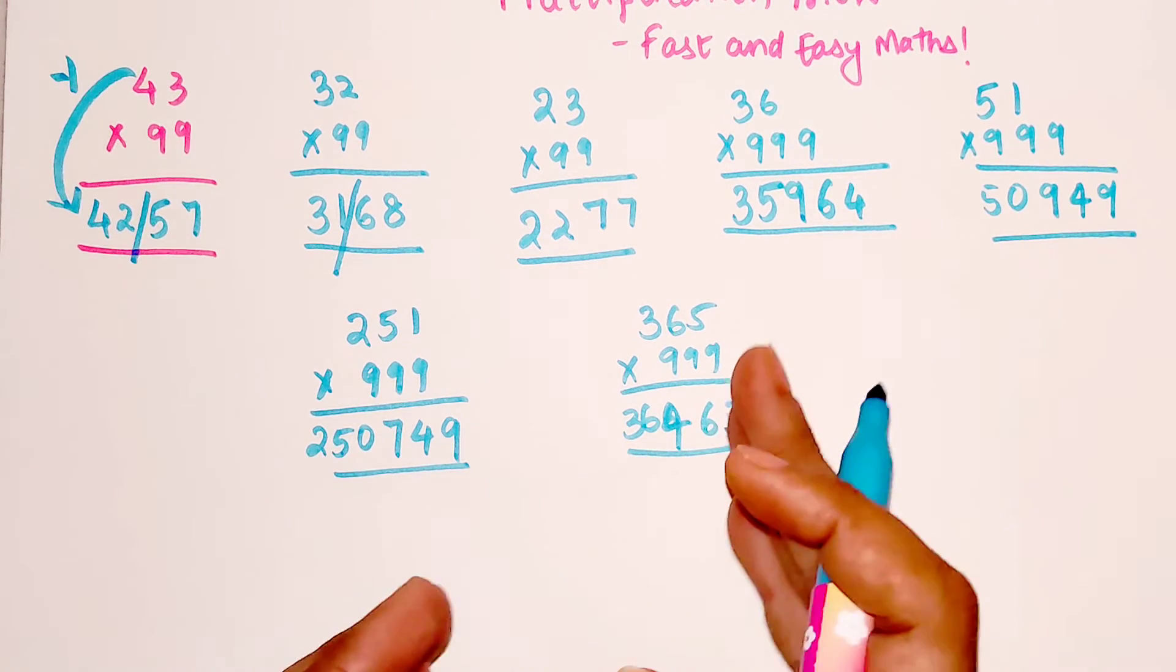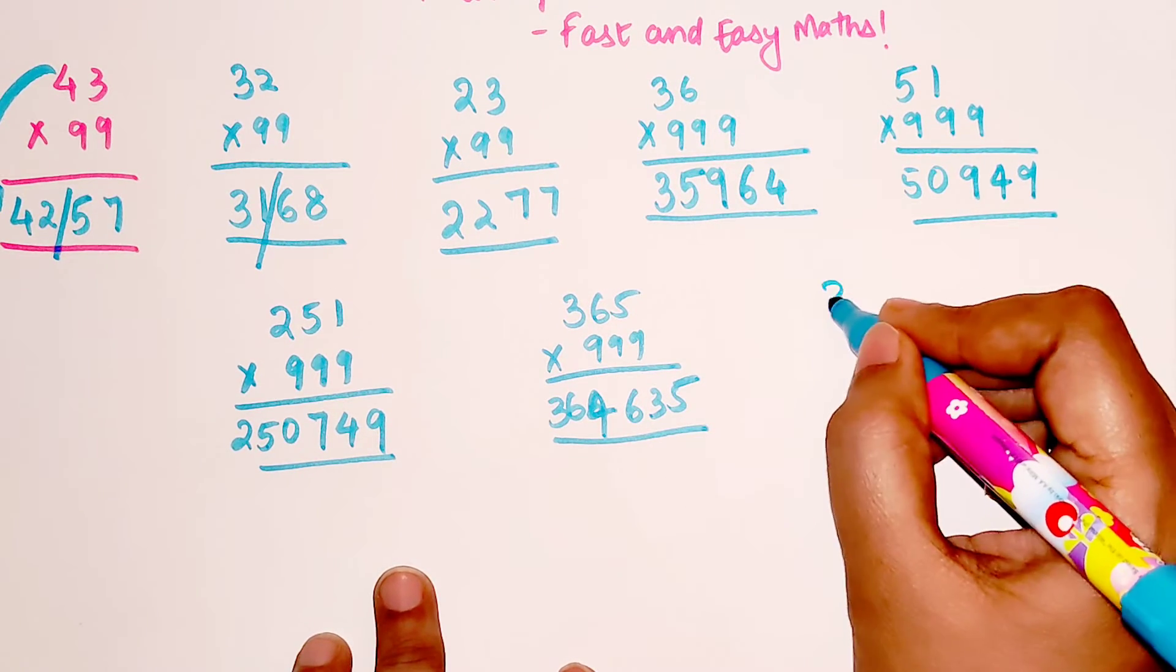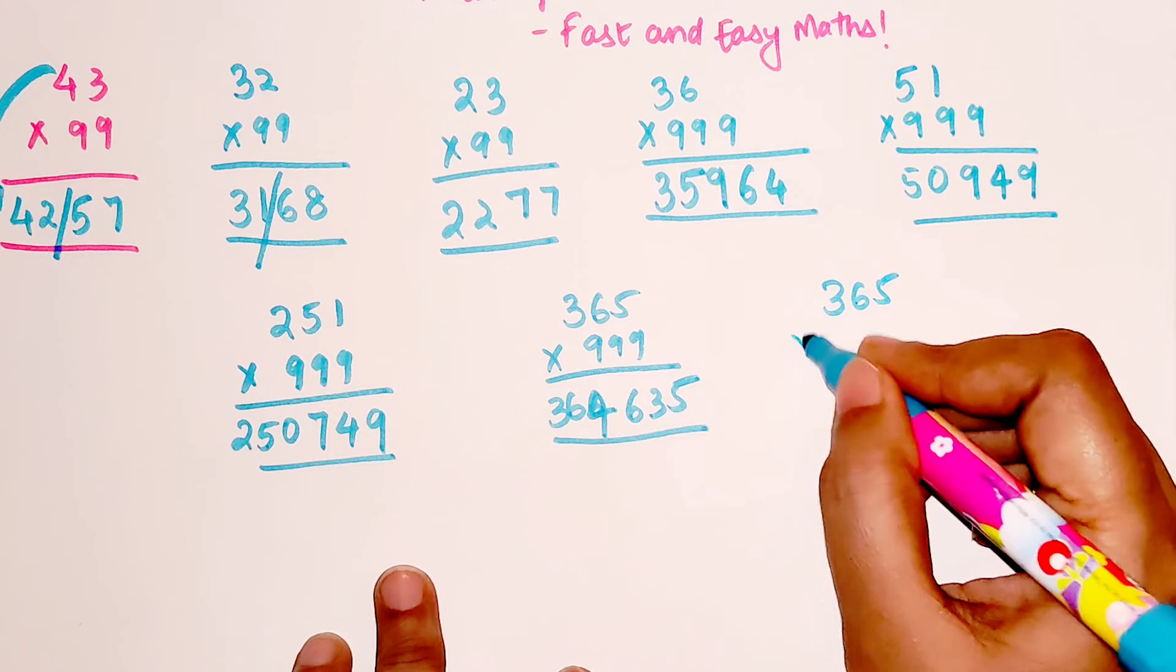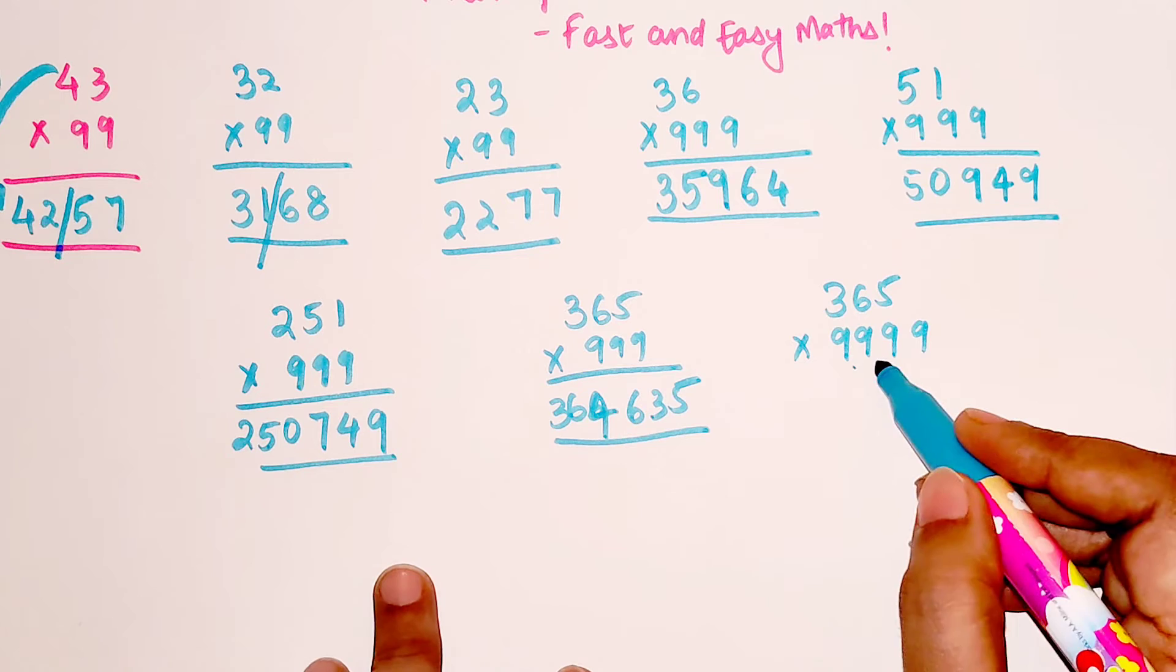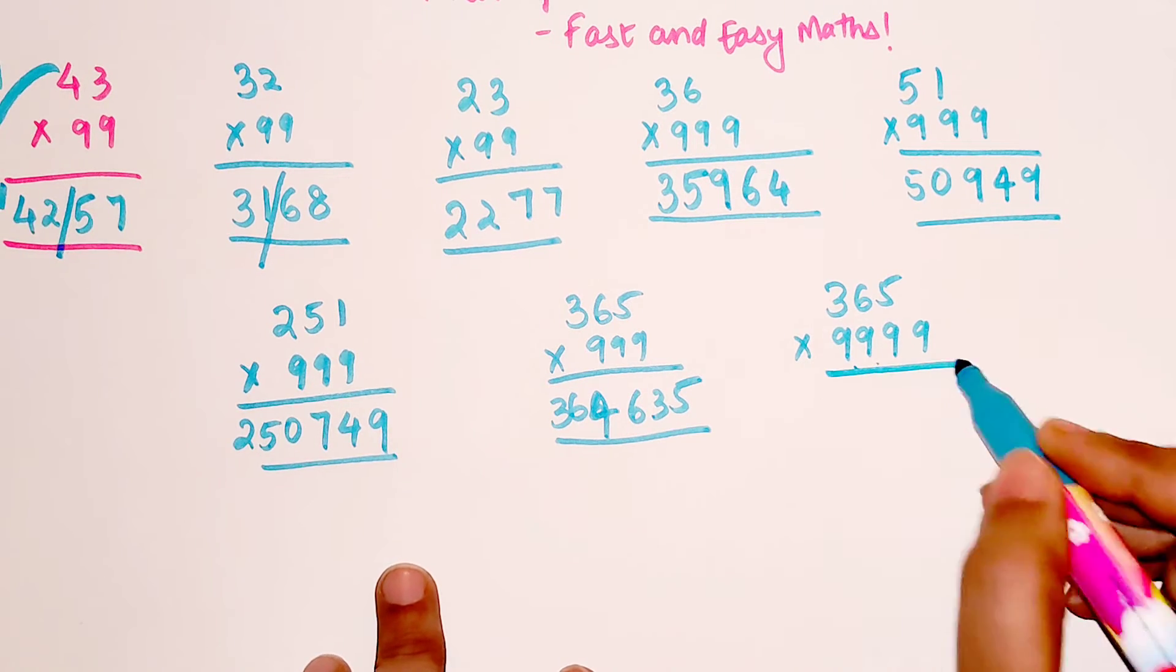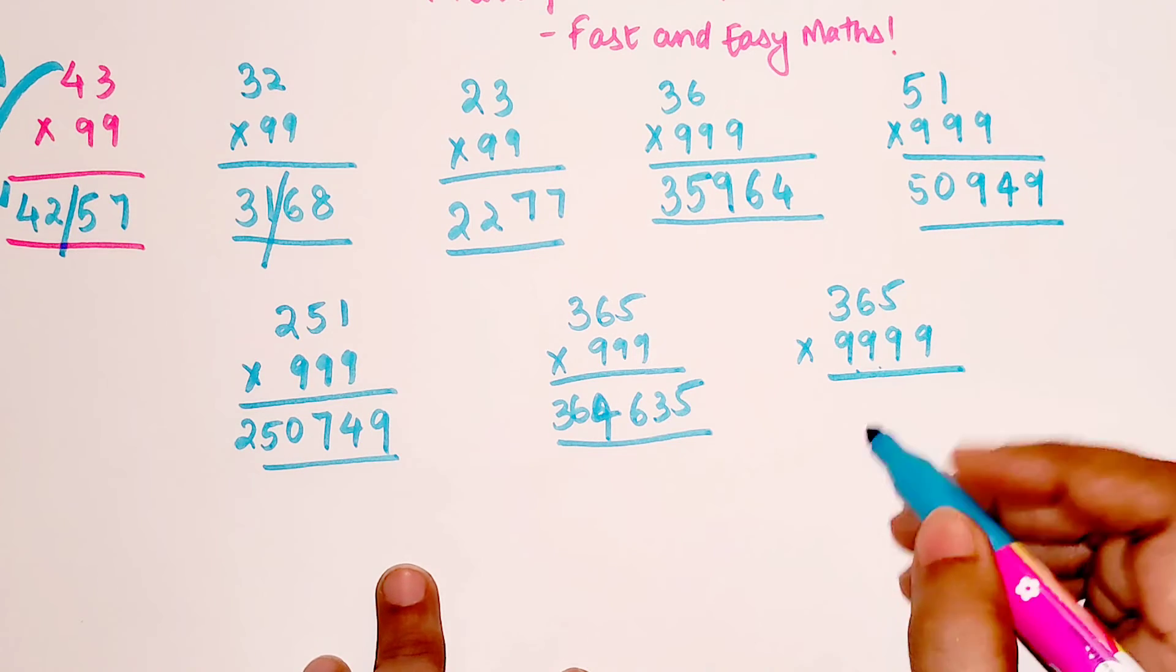Now you might be wondering, what if we do the same, 365, and instead of 999, if we had 4 times 9, basically 9999. Then in that case, what you would have done is the same rule which we did over here. So basically here we have 364, and then we will add a 9 before continuing the addition part.